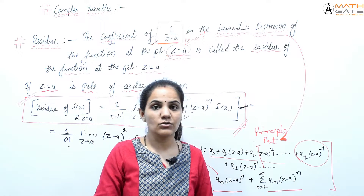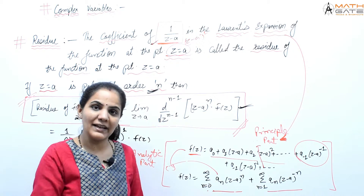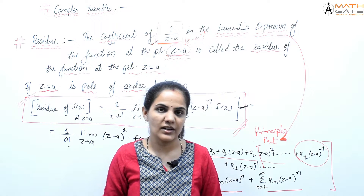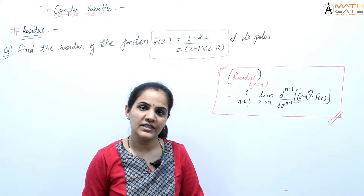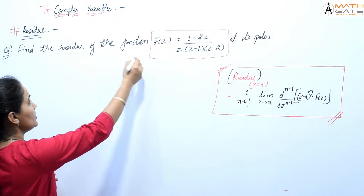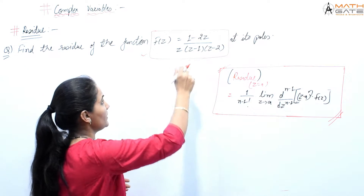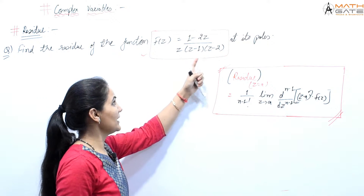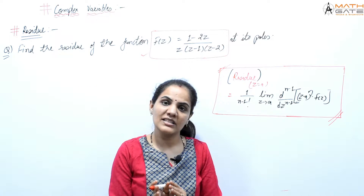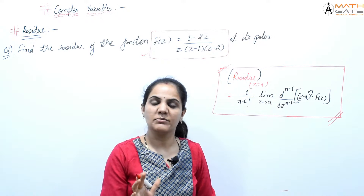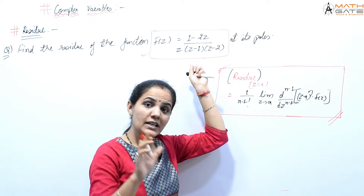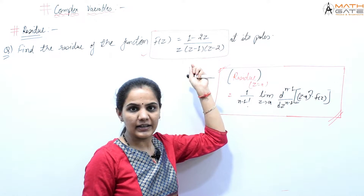Now let's look at residue questions. Example 1: Find the residue of f(z) = (1−2z) / [z(z−1)(z−2)] at its poles. This is a simple basic example taken to understand the process. We need to find the residue at each pole of this function.